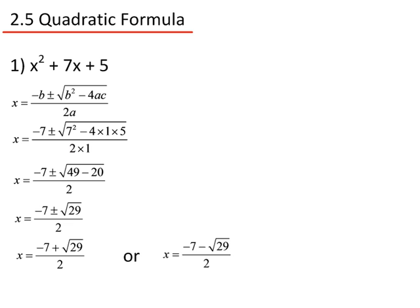These two solutions are: x equals minus 7 plus the square root of 29, divided by 2; or x equals minus 7 minus the square root of 29, divided by 2.